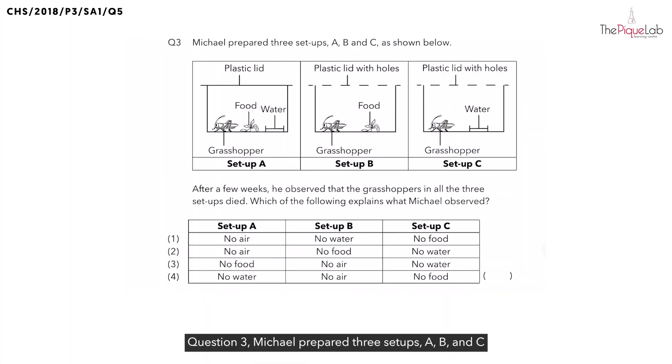Question 3. Michael prepared 3 setups A, B and C as shown below and they said after a few weeks, he noticed that the grasshoppers in all the 3 setups died. So, they want us to find out which of the following explains what Michael observed.